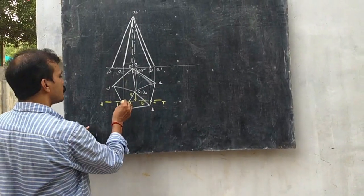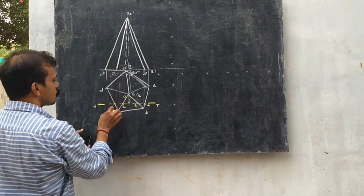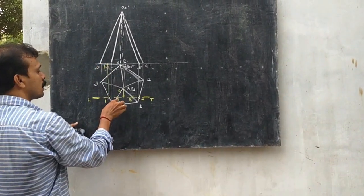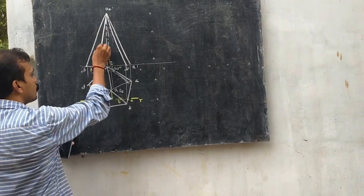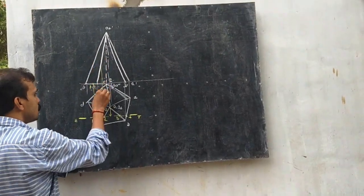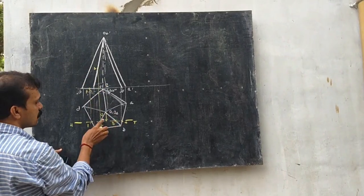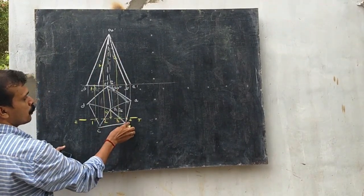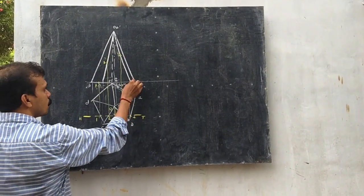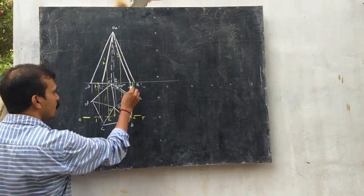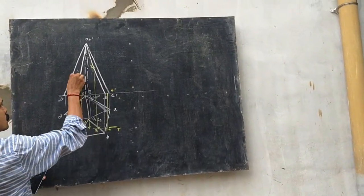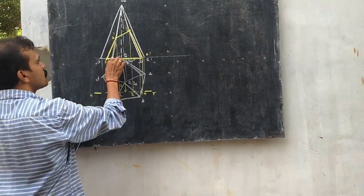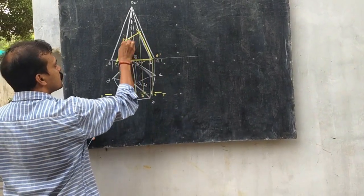Now project all these points. Point 1 is on edge CD, so project like this to obtain 1 dash. Point 2 is on lateral edge OC, so project like this — this will be 2 dash. Similarly, point 3 is on lateral edge OB, so this will be 3 dash. Point 4 is a point on the base, so project here and that will be 4 dash. So now we have 1 dash, 2 dash, 3 dash, and 4 dash. Remove the cutting part, so this will be the sectional view.